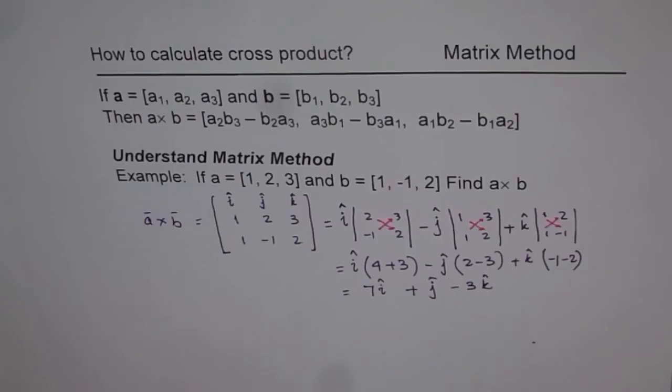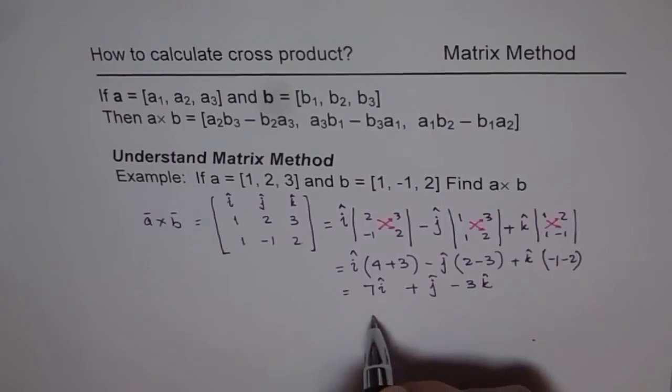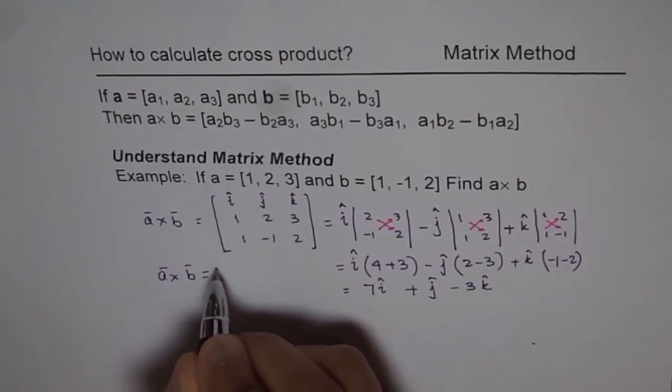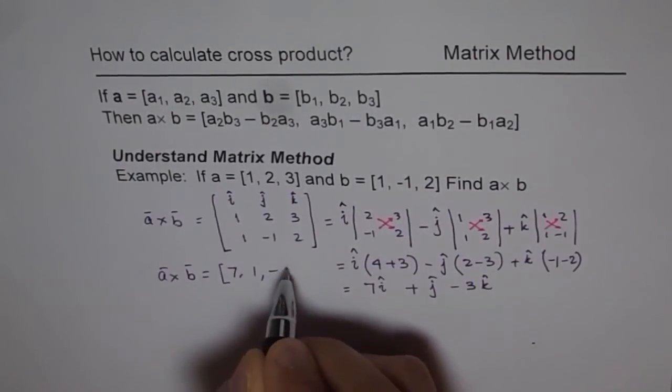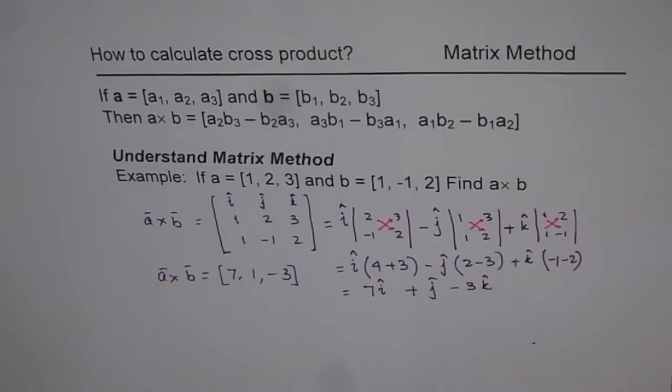So we get A cross B is 7i plus j minus 3k. So that is our answer for the given question. We can write A cross B equals to 7, 1, minus 3. So that is the way we can apply matrix and do the same thing. I hope you don't find it very difficult. Get used to this process and soon you'll start appreciating it. That's the only way.